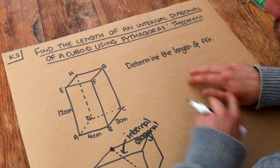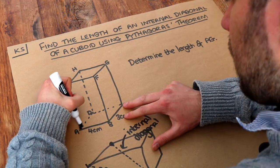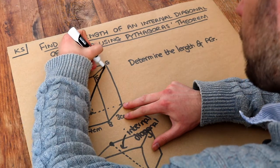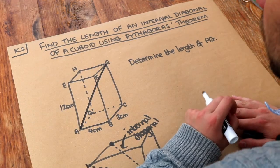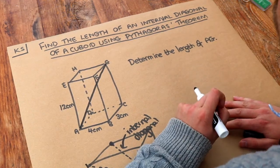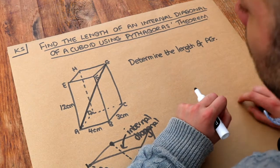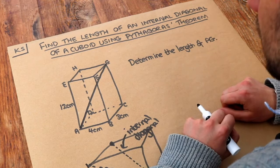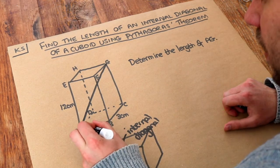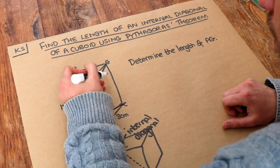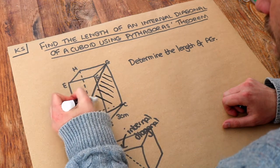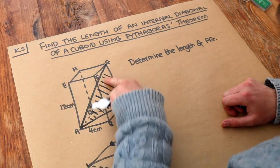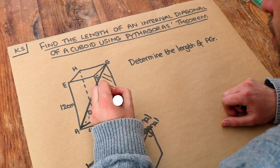We're trying to find the length of AG so let's connect A to G. It's this line here. Now the key to solving these problems is to identify a right angle triangle that uses that length you're interested in as the hypotenuse. Now can you see that by adding the line AC that this is now a right angle triangle floating in 3D.